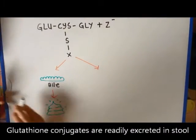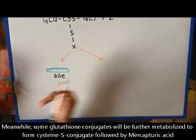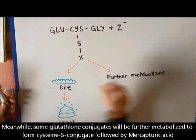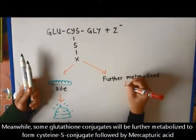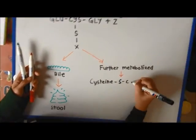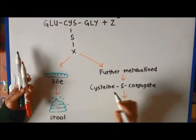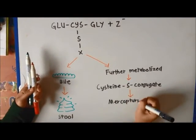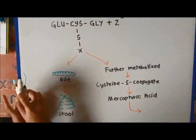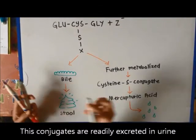Glutathione conjugates are readily excreted in stool. Meanwhile, some glutathione conjugates will be further metabolized to form cysteine S-conjugate, followed by mercapturic acid. These conjugates are readily excreted in urine.